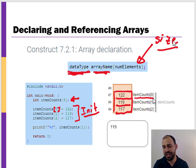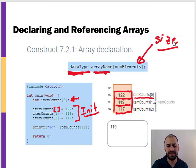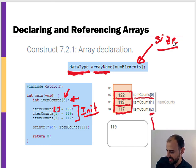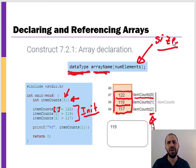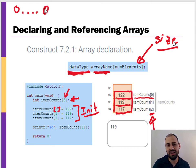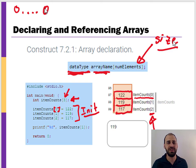Then we write 119 to location one, and 117 to location two. A very common mistake: the size of the array is three, but the last element is at location two, not location three, because we start counting at zero. Why do we start at zero? Because in binary, a number of all zeros is the smallest thing we can represent with a certain number of bytes — there's historical rationale for this.